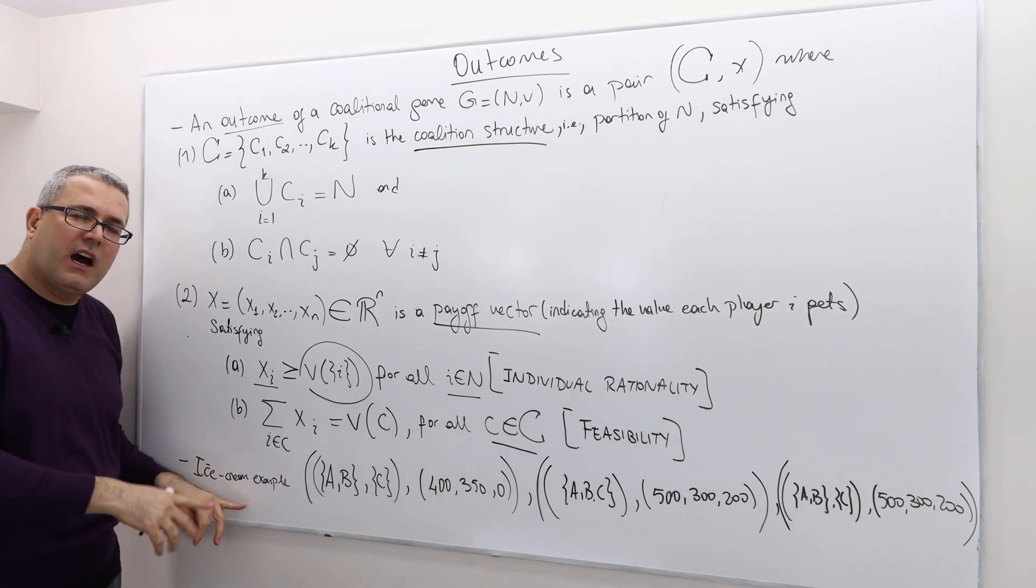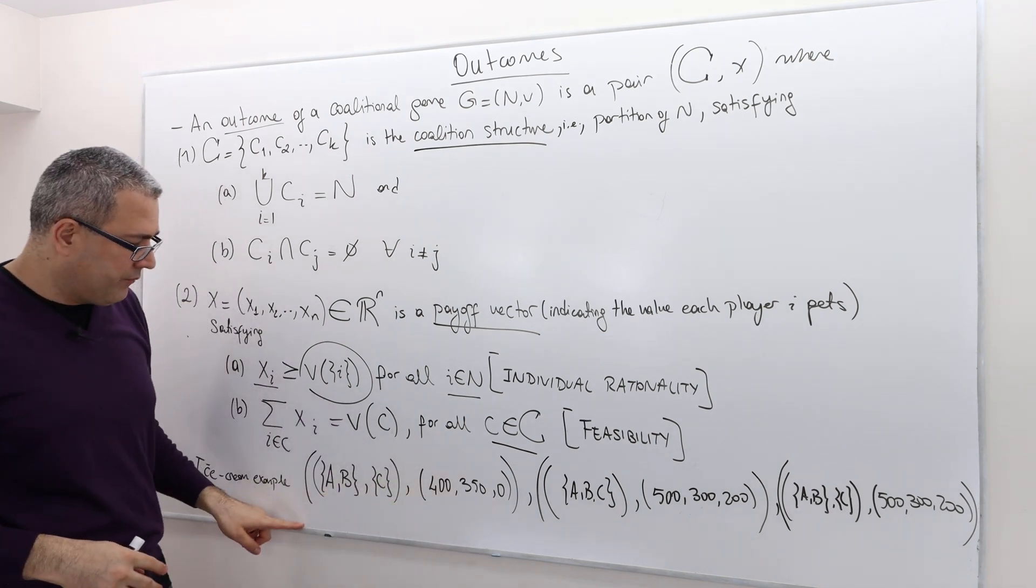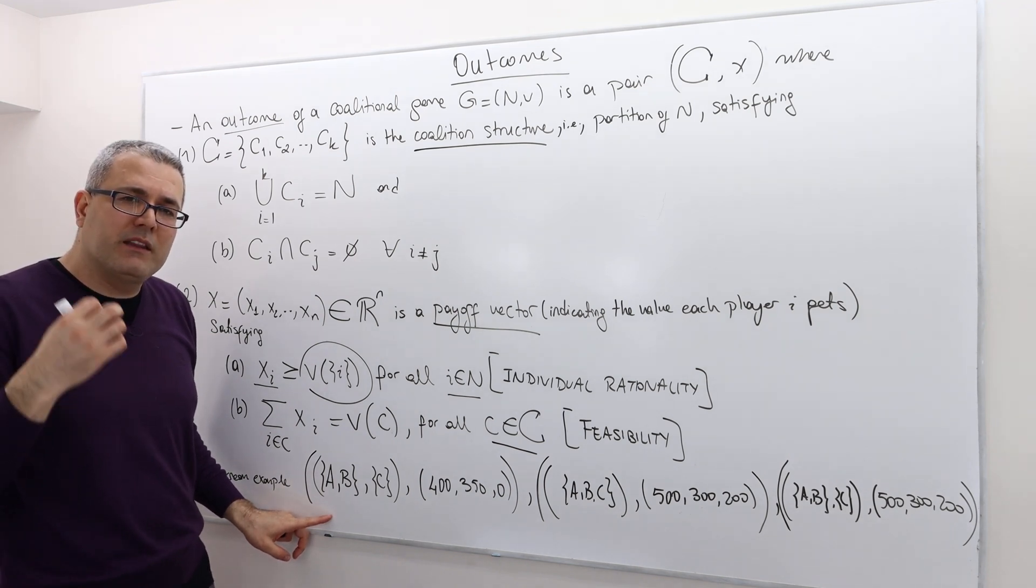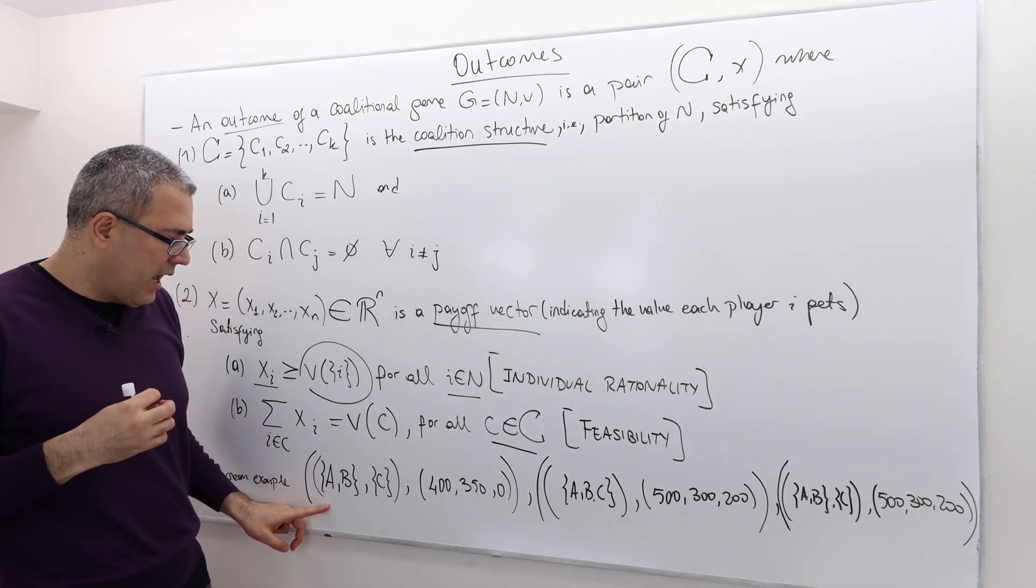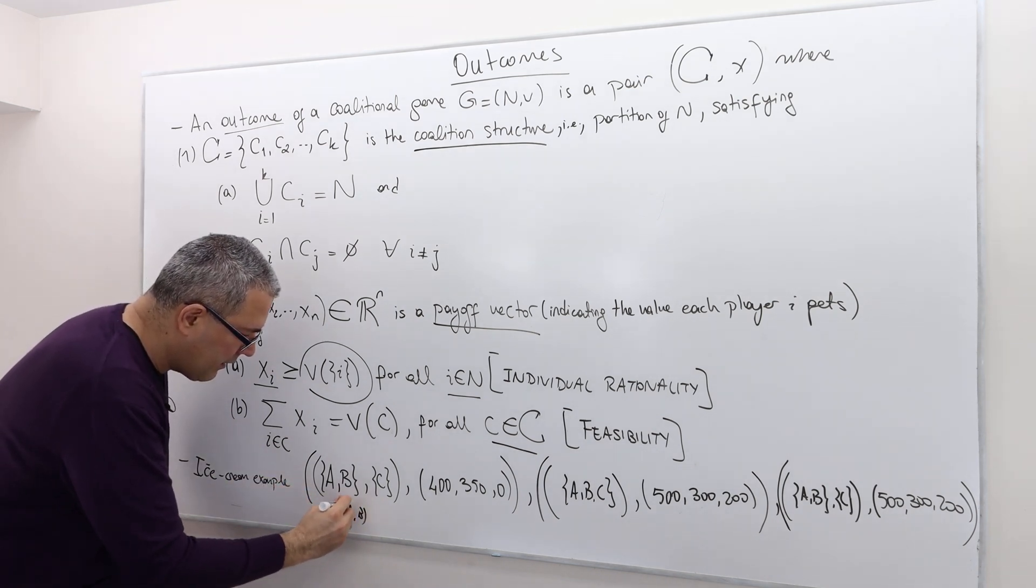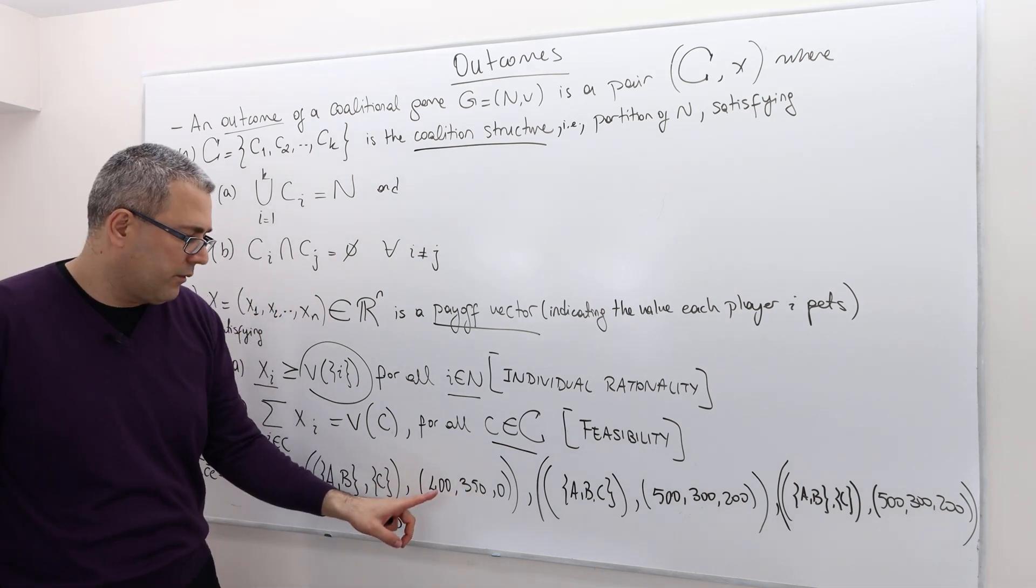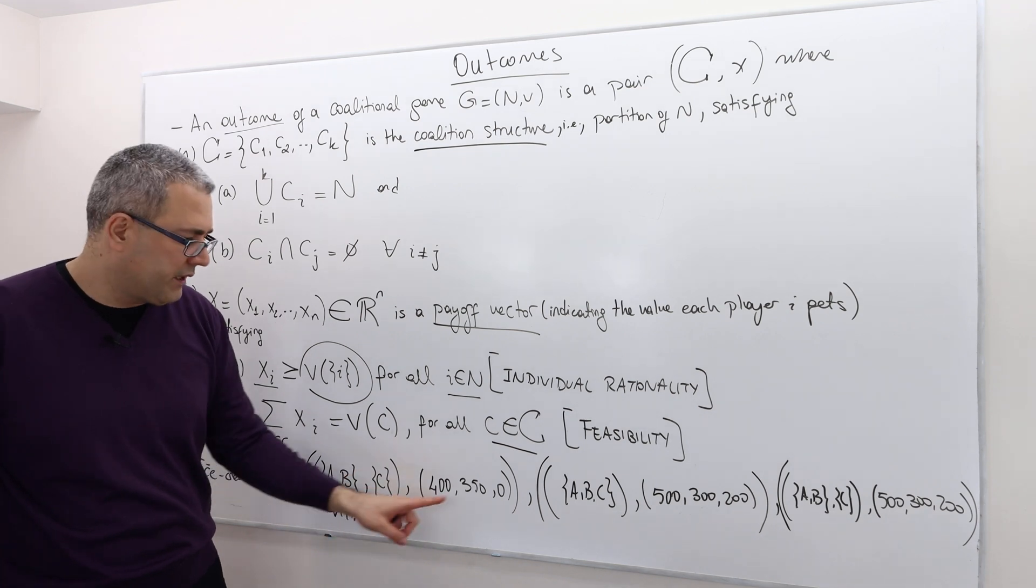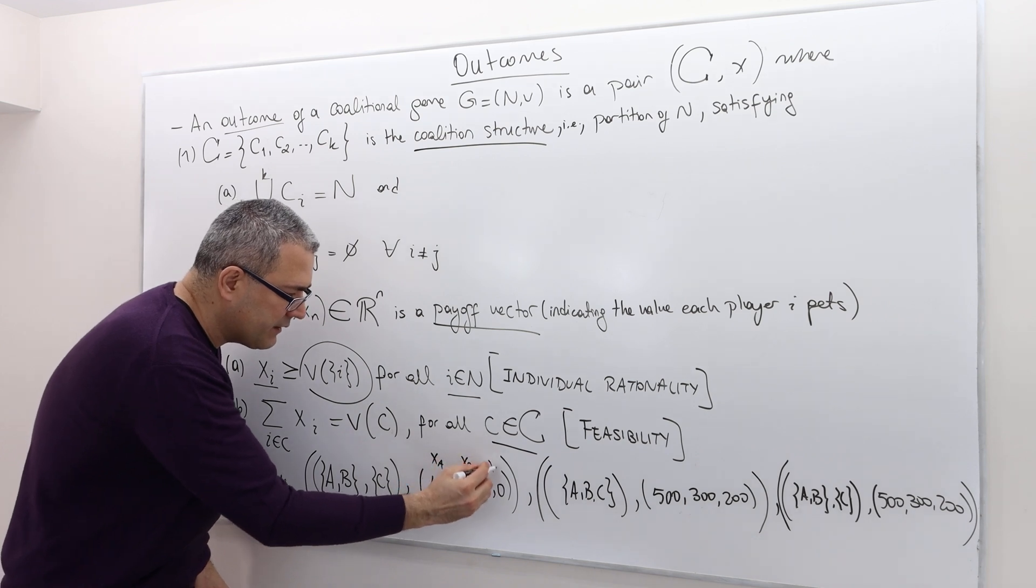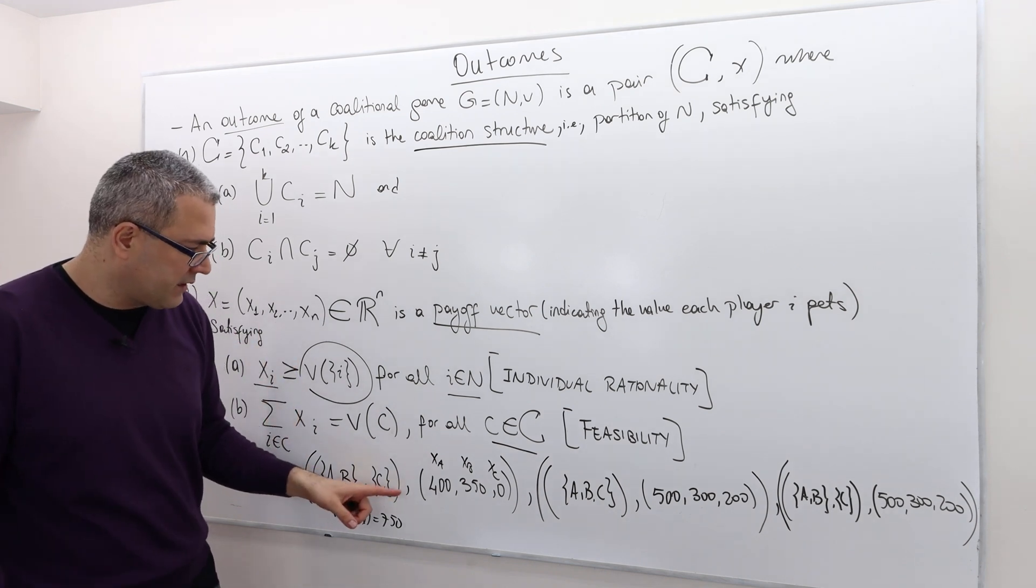if we consider the ice cream example, so here, one outcome, A and B form a coalition. Remember, they can buy the medium-sized ice cream. And so their worth is, V of AB is equal to 750. And the way they split it as follows. So agent A gets 400, agent B gets 350. So this is XA, this is XB, this is XC. So I don't use 1, 2, 3 in this example. Again, let's be flexible.